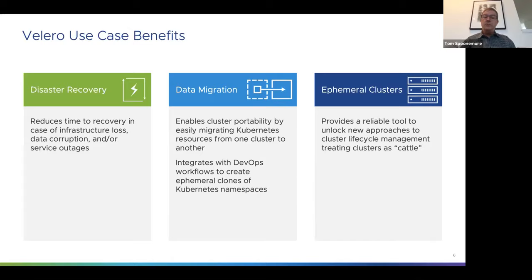Now for a second scenario: migrating an application not just to a different cluster but to an entirely different cloud provider. For this we'll use Velero's Restic integration. We need to tell Velero to use Restic to back up persistent volumes rather than GCP snapshots, because we're migrating into an Azure cluster and Azure has no way to restore a GCP snapshot. Restic provides a provider-agnostic backup of our data so we can restore it into another platform.